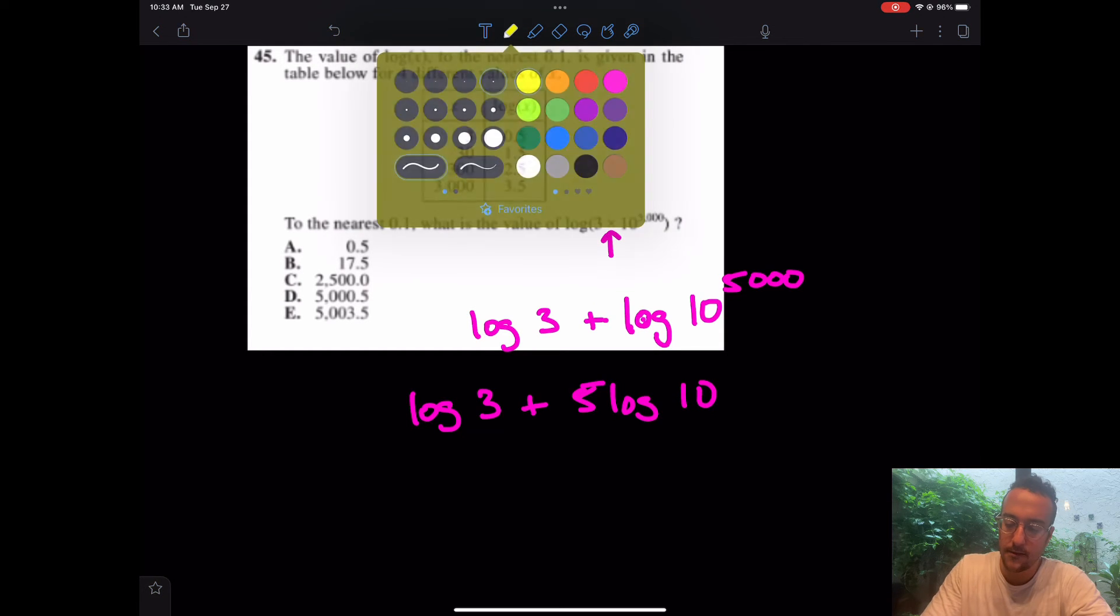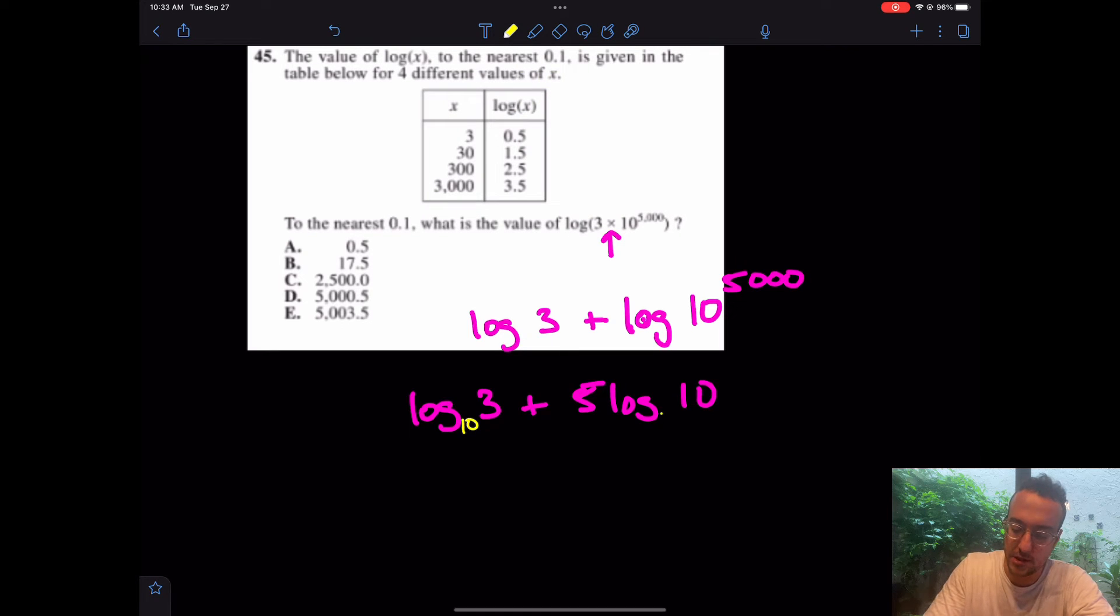And remember, it doesn't specify, but these are in log base 10. If a log doesn't specify, it is in base 10. From there, what is log base 10 of 10? Just 1. And this test is designed for no calculator. So what is log base 10 of 3 without a calculator? It's 0.5.